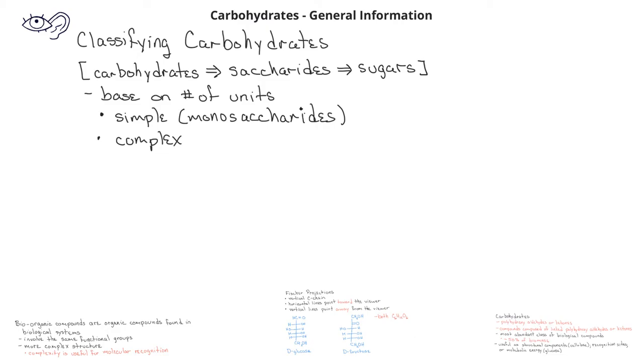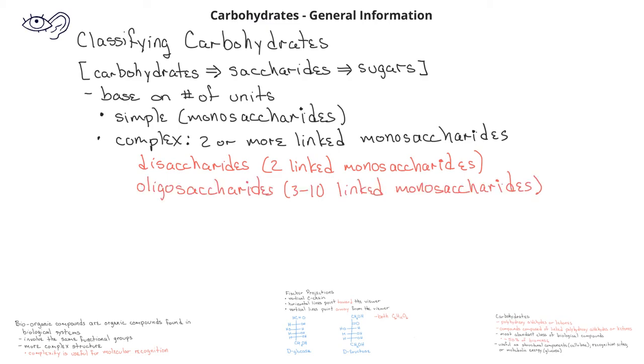Complex carbohydrates involve two or more monosaccharide units linked together. If there are two linked monosaccharides, the complex carbohydrate is known as a disaccharide. If the complex carbohydrate has three to ten monosaccharide units linked together, we call this an oligosaccharide. If the complex carbohydrate has more than ten monosaccharide units linked together, we call this a polysaccharide.